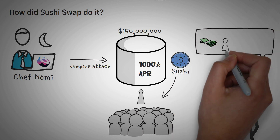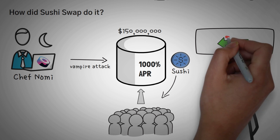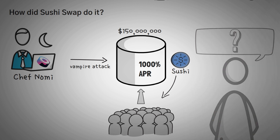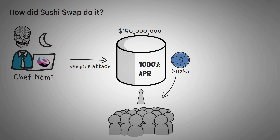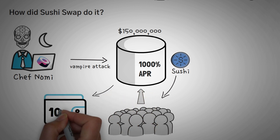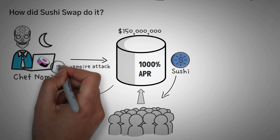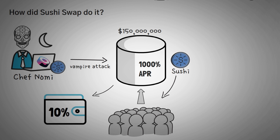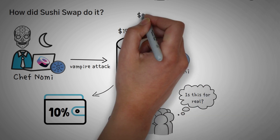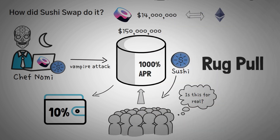Now you might be wondering, why would you spend so much time and money creating a protocol for traders if you don't get anything out of it? Well, Chef Nomi is anonymous — he doesn't even get the fame. But there was a part of the protocol that gave his developer wallet around 10% of all SUSHI tokens. Due to this, he accumulated a very large amount of SUSHI that was supposed to be used for developing the protocol further. Everyone was surprised when he took $14 million worth of SUSHI tokens and traded them for Ethereum.